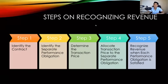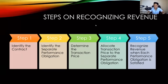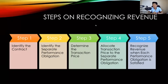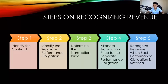Step number two is to identify the separate performance obligations. Step three is to determine the transaction price. Step four is to allocate the transaction price to the separate performance obligations — meaning, after determining the transaction price and identifying the separate performance obligations, we allocate the price from step three to the obligations identified in step two. Step five is to recognize revenue when each performance obligation is satisfied.